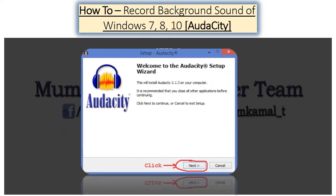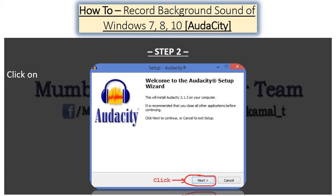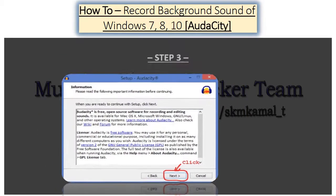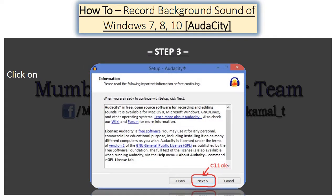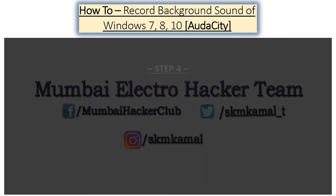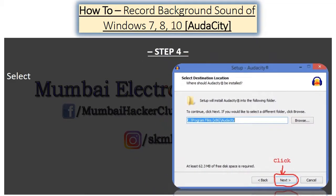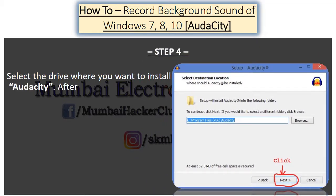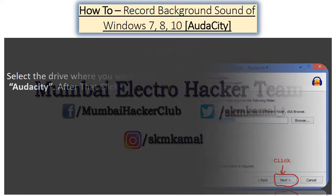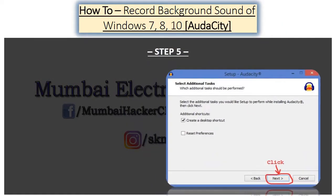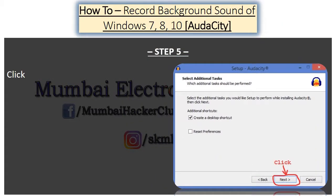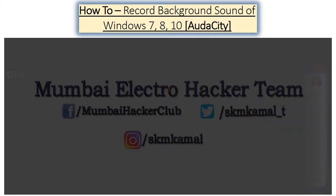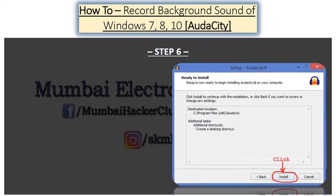Step 2: Click on Next. Step 3: Click on Next. Step 4: Select the drive where you want to install Audacity, then click on Next. Step 5: Click on Next. Step 6: Click on Install.